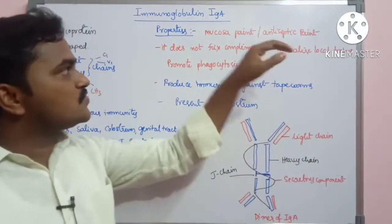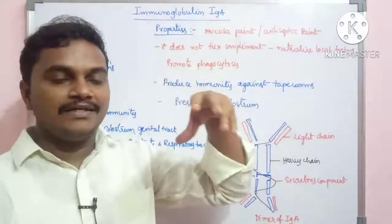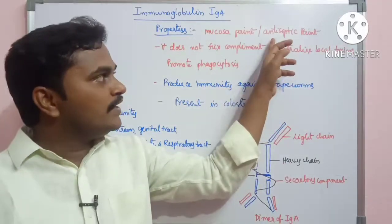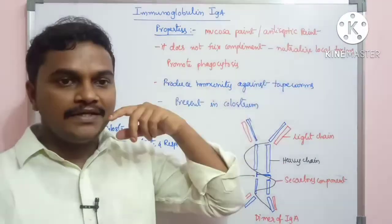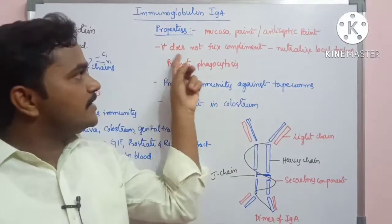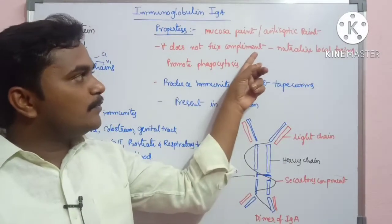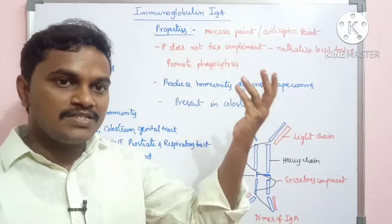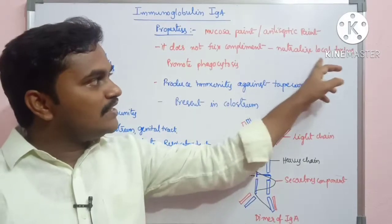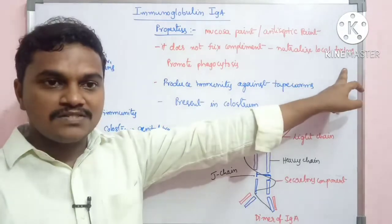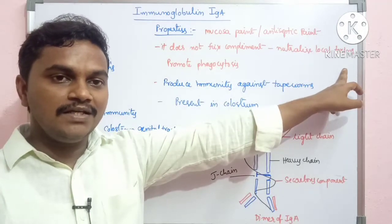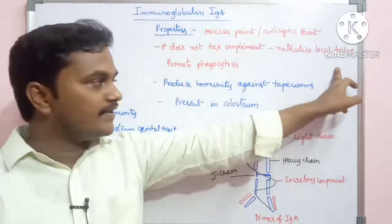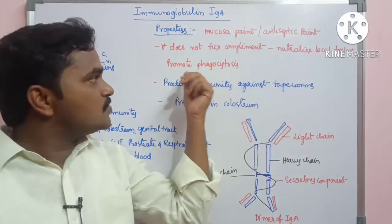Key properties of IgA: it is used to neutralize mucosal pathogens, providing protection at mucosal surfaces. It does not fix complement. It neutralizes local toxins at local anti-intestinal areas like the respiratory surface lining.